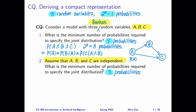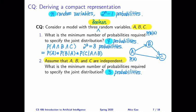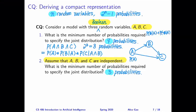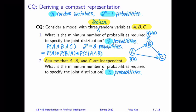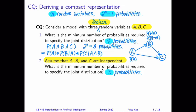What about B? B conditions on the value of A, so technically we need to specify four numbers: B true given A true, B false given A true, B true given A false, and B false given A false. But notice that P(B|A) + P(not B|A) = 1, so we only need to specify one of each pair. So because B conditions on A, we need to specify two probabilities out of the four.